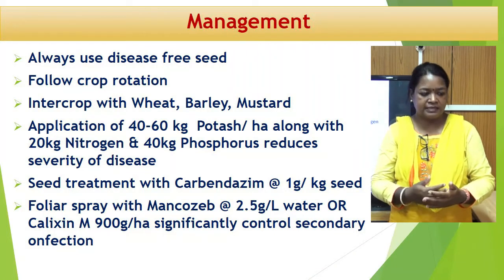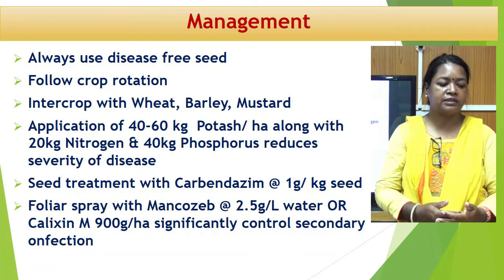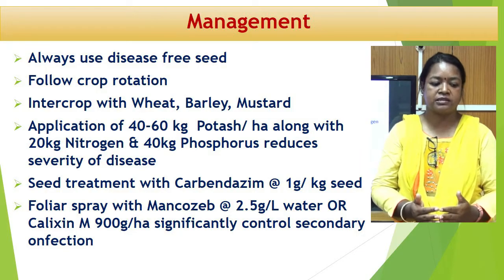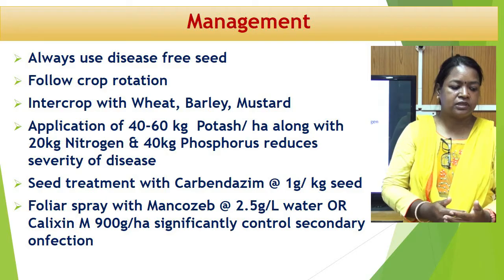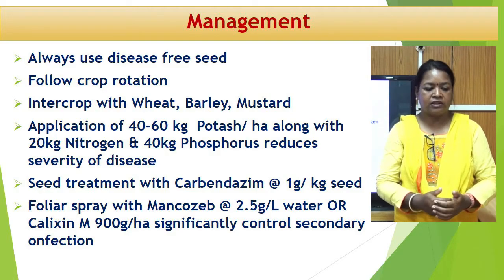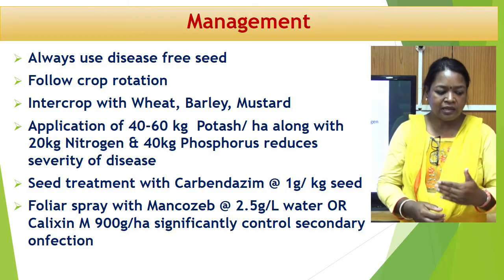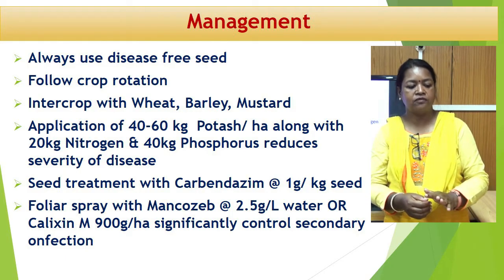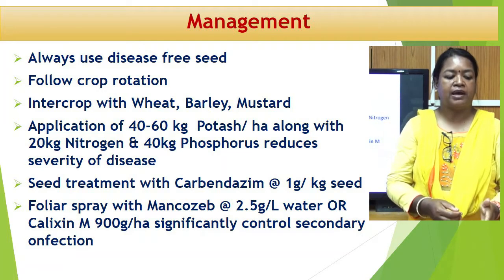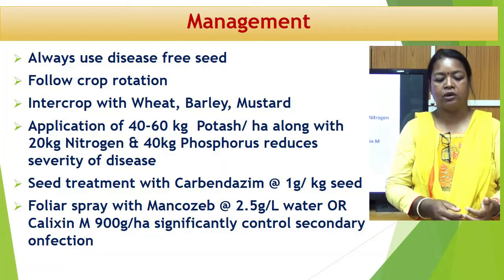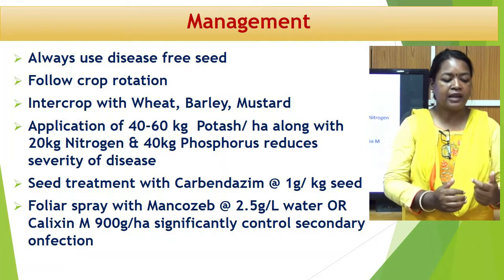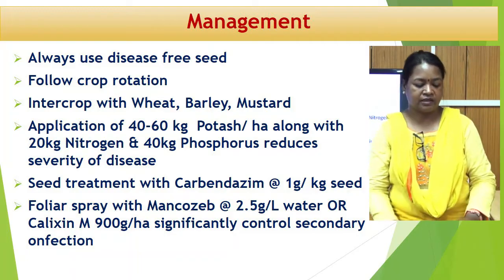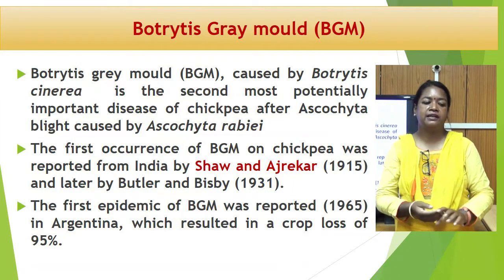For management, always use disease-free seed, follow crop rotation, and intercrop with wheat, barley, or mustard. Application of 40–60 kg potash along with 20 kg nitrogen and 40 kg phosphorus reduces the severity of disease. Seed-borne infection can be eliminated by seed treatment with Carbendazim at the rate of 1 gram per kg of seed. Foliar spray of Mancozeb at 2.5 gram per litre, or Calixin M at 900 gram per hectare, significantly controls secondary infection.